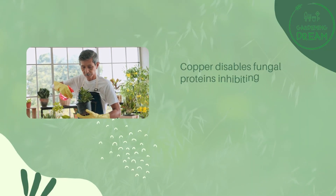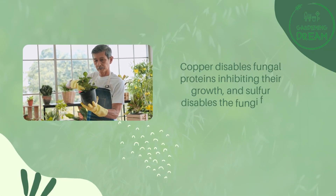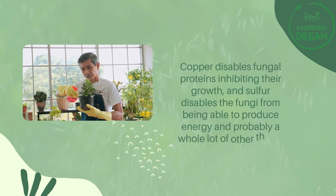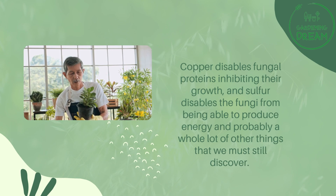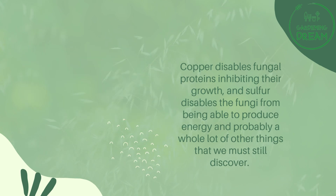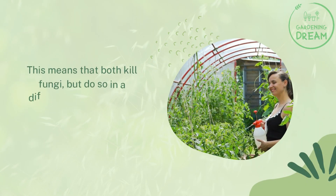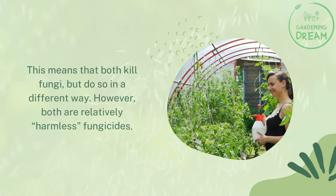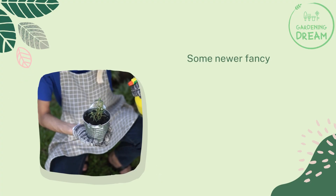Copper disables fungal proteins, inhibiting their growth, and sulfur disables the fungi from being able to produce energy — and probably a whole lot of other things that we must still discover. This means that both kill fungi, but do so in a different way. However, both are relatively harmless fungicides.